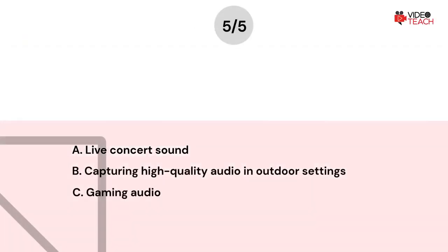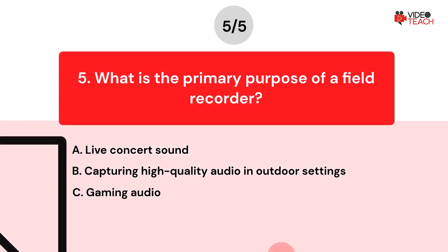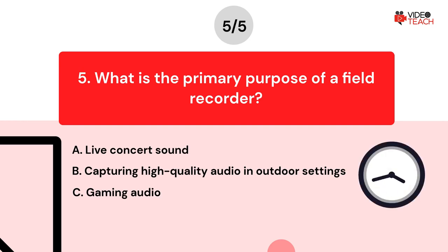Question number five. What is the primary purpose of a field recorder? Option A: Live concert sound. Option B: Capturing high-quality audio in outdoor settings. Option C: Gaming audio. Now you have about 15 seconds to think about your answer.